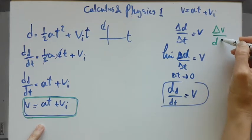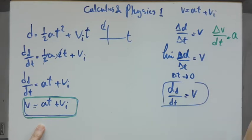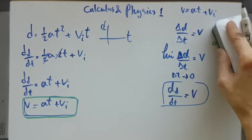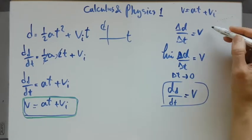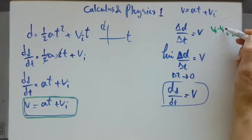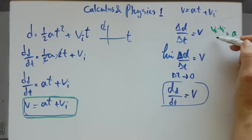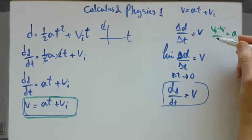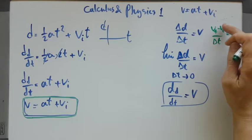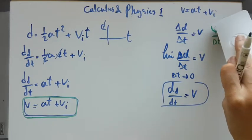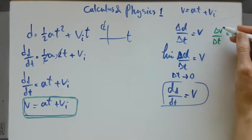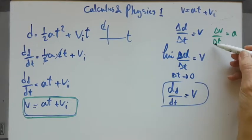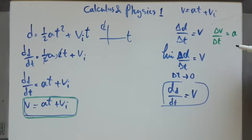The derivative of velocity is obviously acceleration. Let's remember the formula for acceleration: it was the change in velocity over time. V final minus V initial is delta V, so change in velocity per unit time is acceleration.